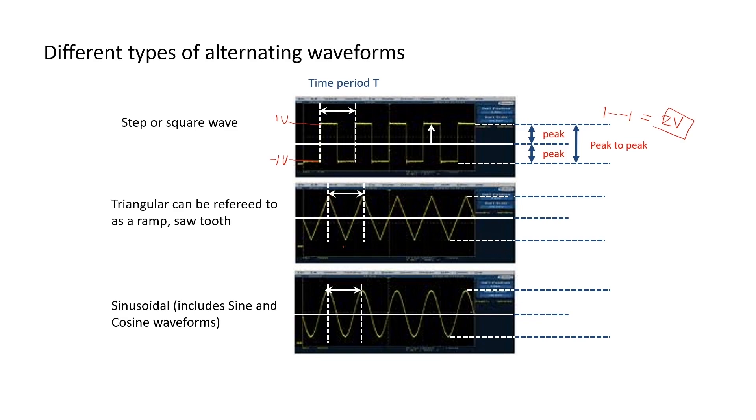Exactly the same for the other two waveforms. Here we have another AC waveform. It's triangular. Again, it's got a period, and it's got an amplitude or a peak, and a negative peak, so it has a peak to peak.